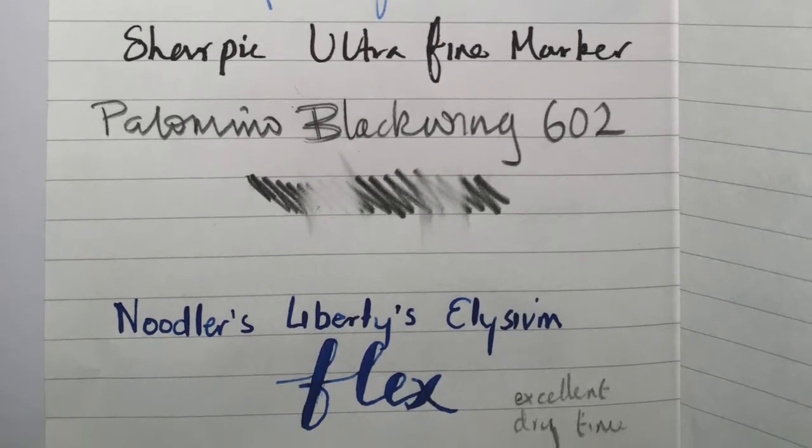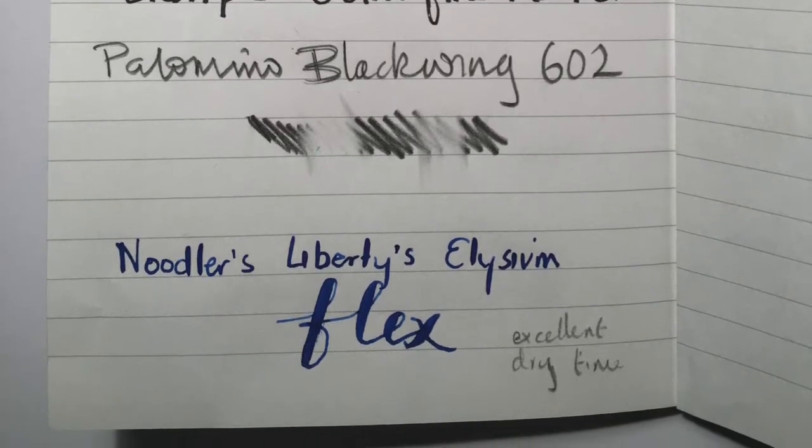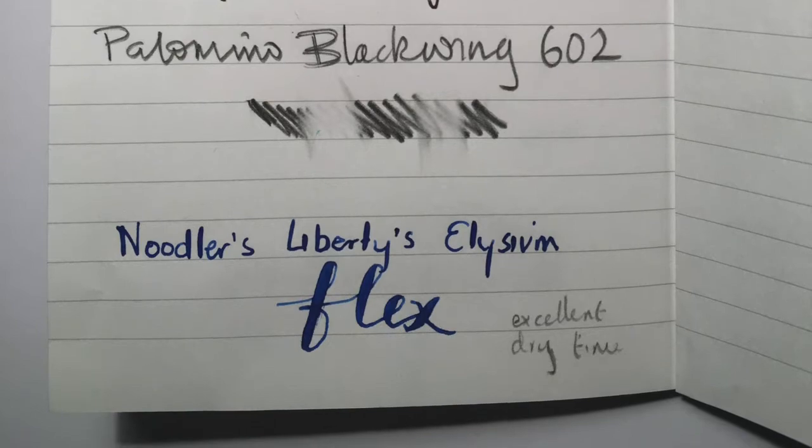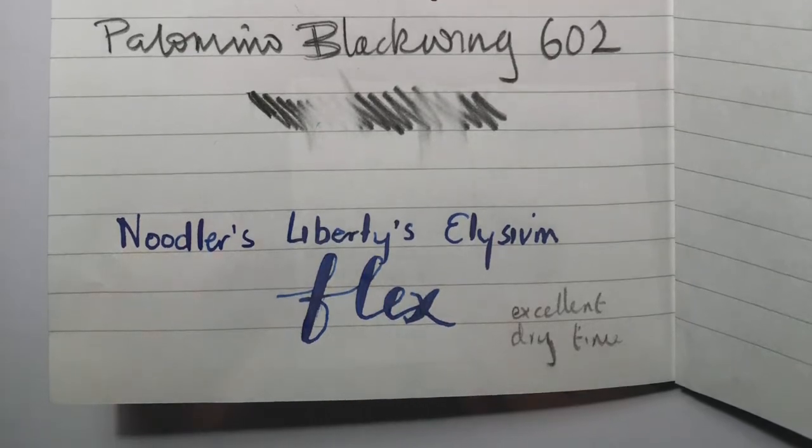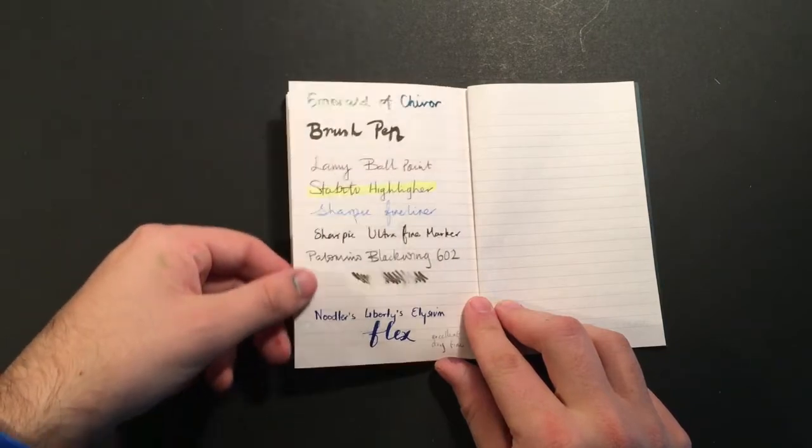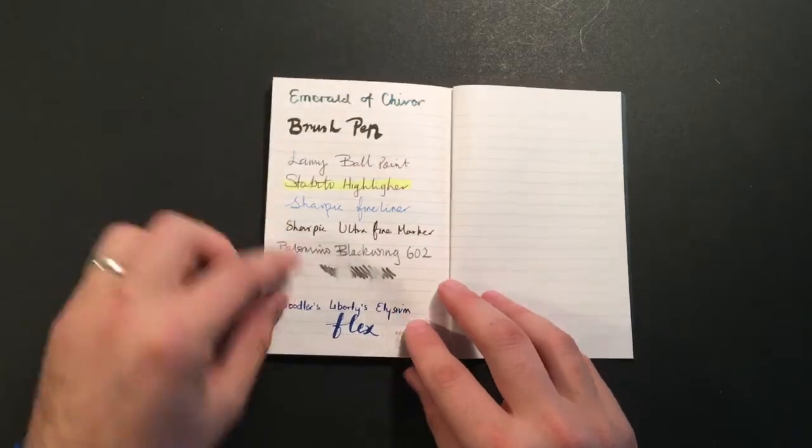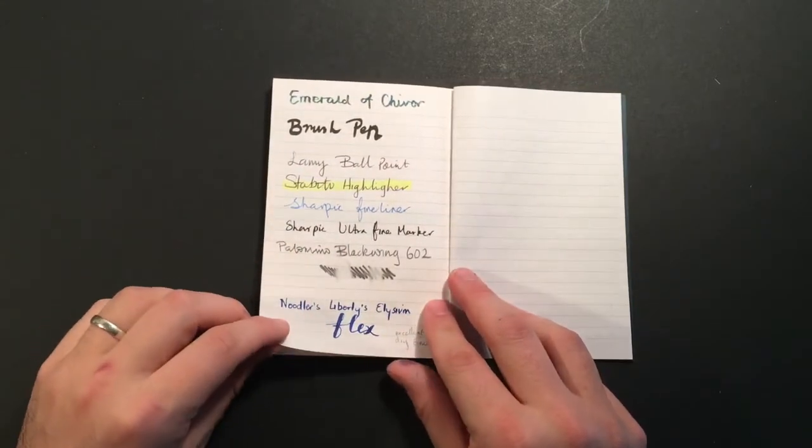And I noted here that it had an excellent dry time. It dried really quickly, in fact much faster than just about any other paper I've tried this on. It's not super absorbent paper. It's still quite smooth, and as you can see from the ghosting and the bleed, there's virtually nothing coming through. But it did dry quite quickly, which was really nice.